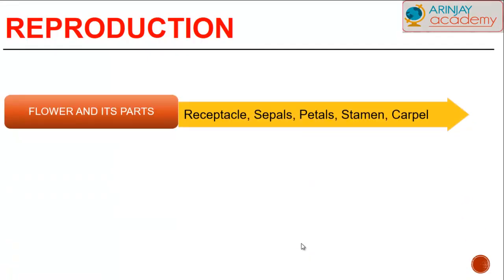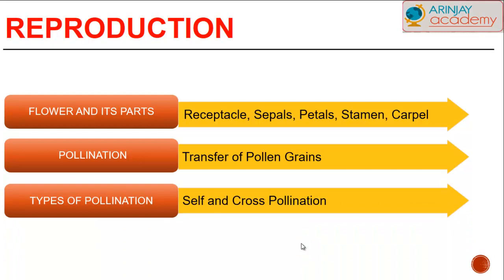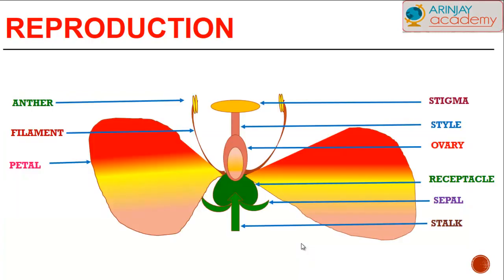The flower has different parts like the receptacle, sepals, petals, stamen the male part, and carpel the female part. It reproduces by pollination, which is the transfer of pollen grains, and the types of pollination are self-pollination and cross-pollination.